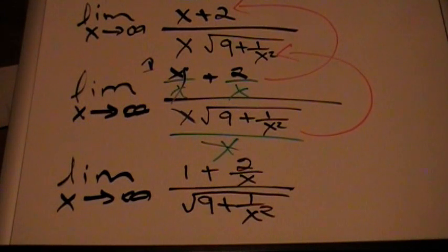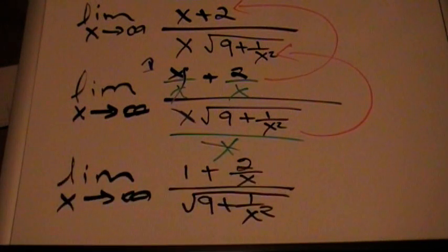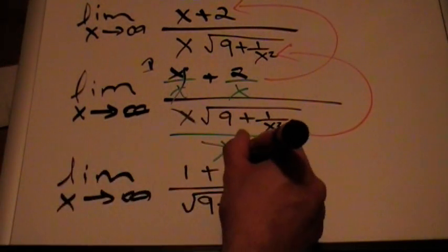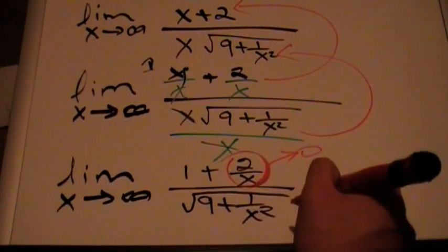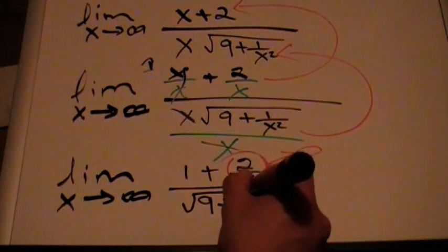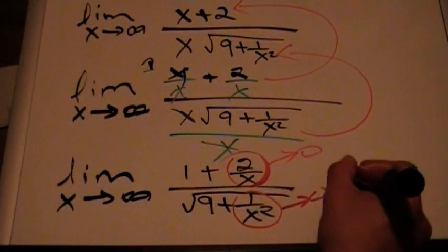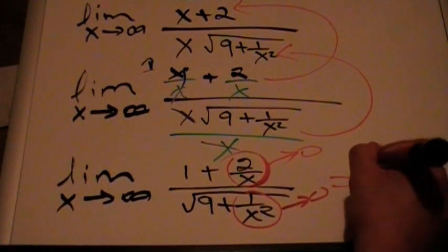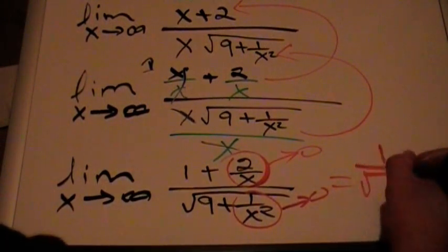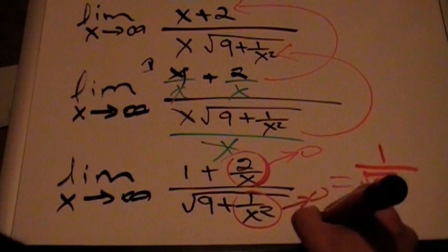When we plug in a very large number for x, the term 2/x approaches zero, and 1/x² also approaches zero. So the limit becomes 1 divided by √9, which equals 1 over 3. And there's our limit.